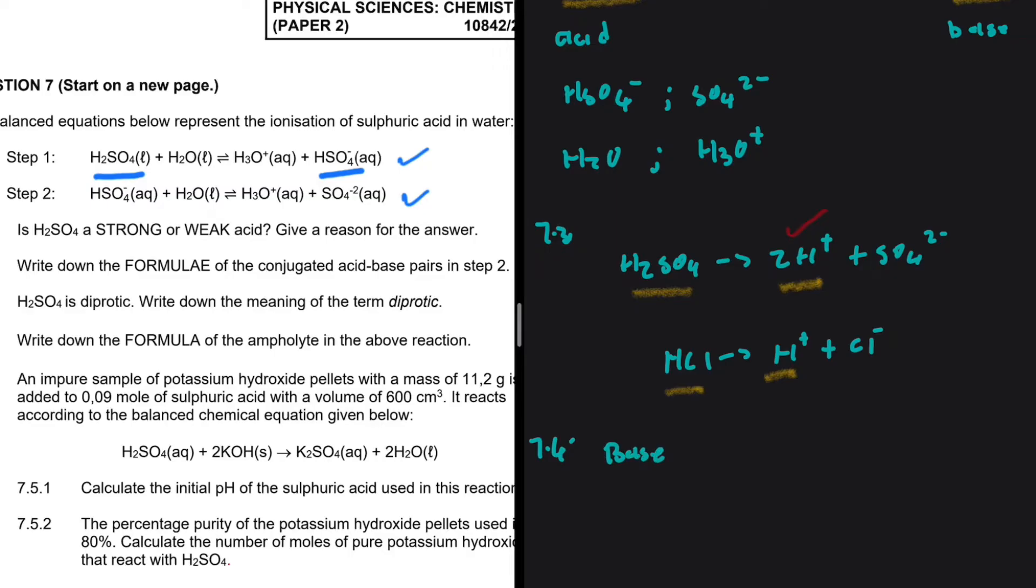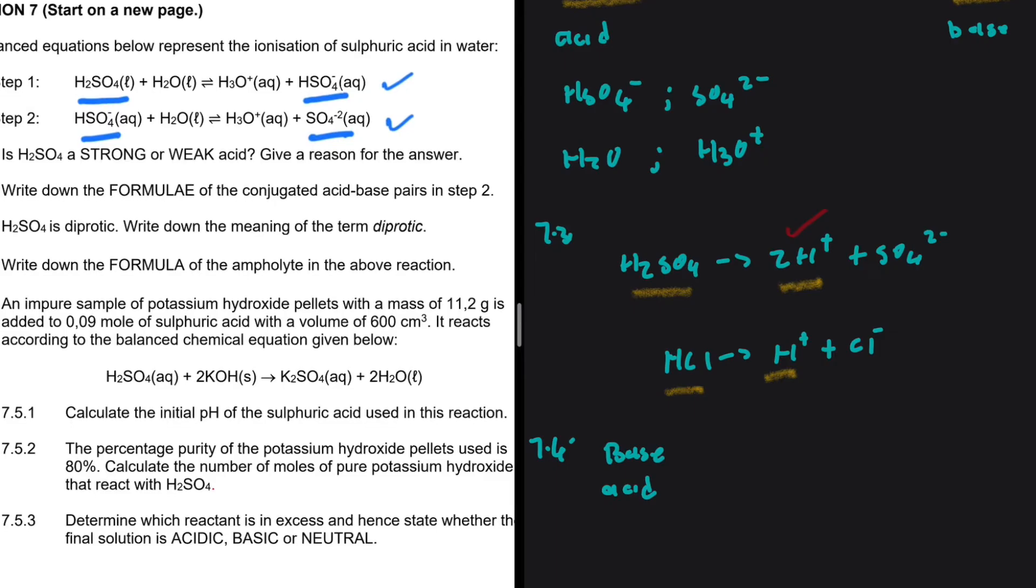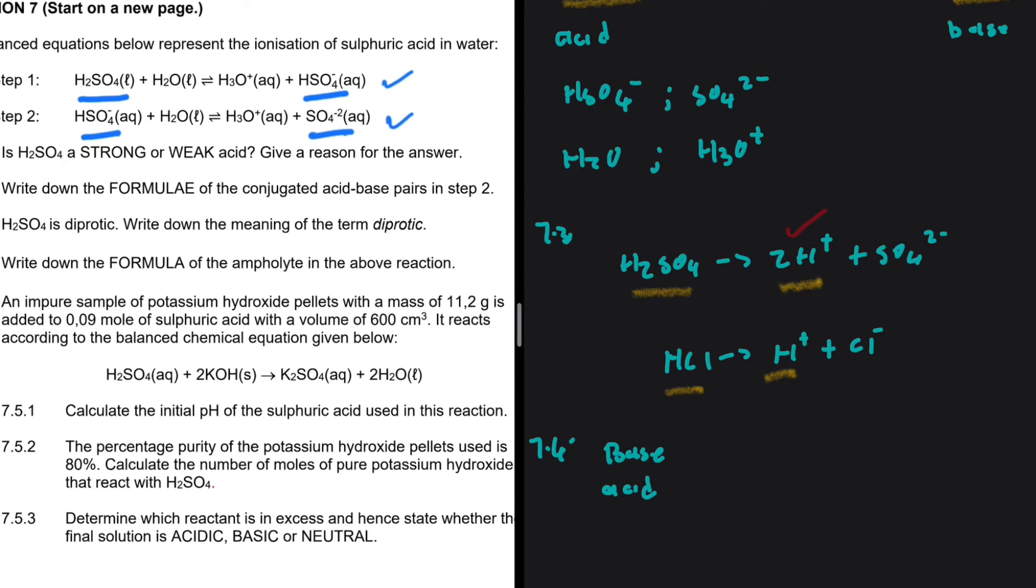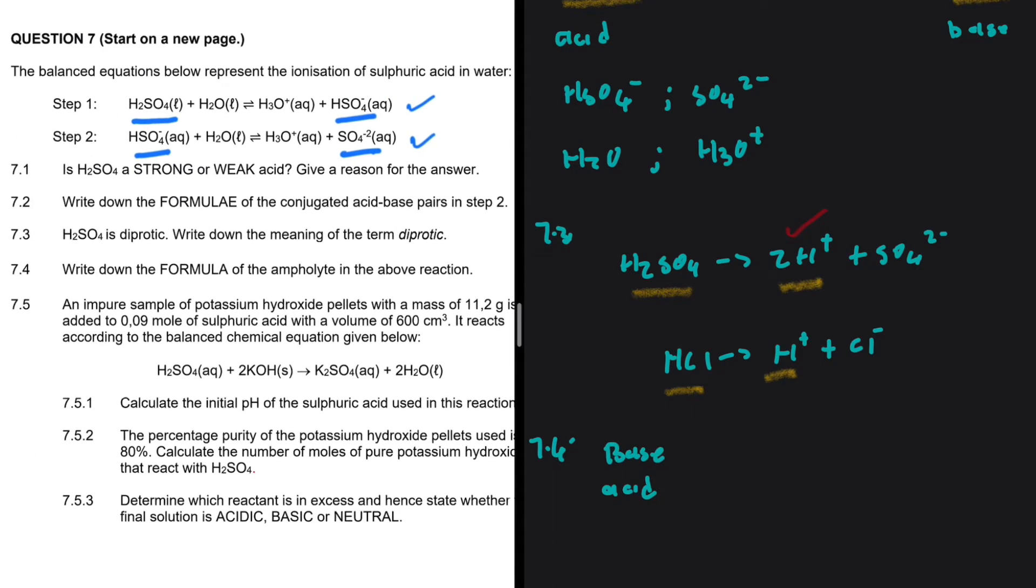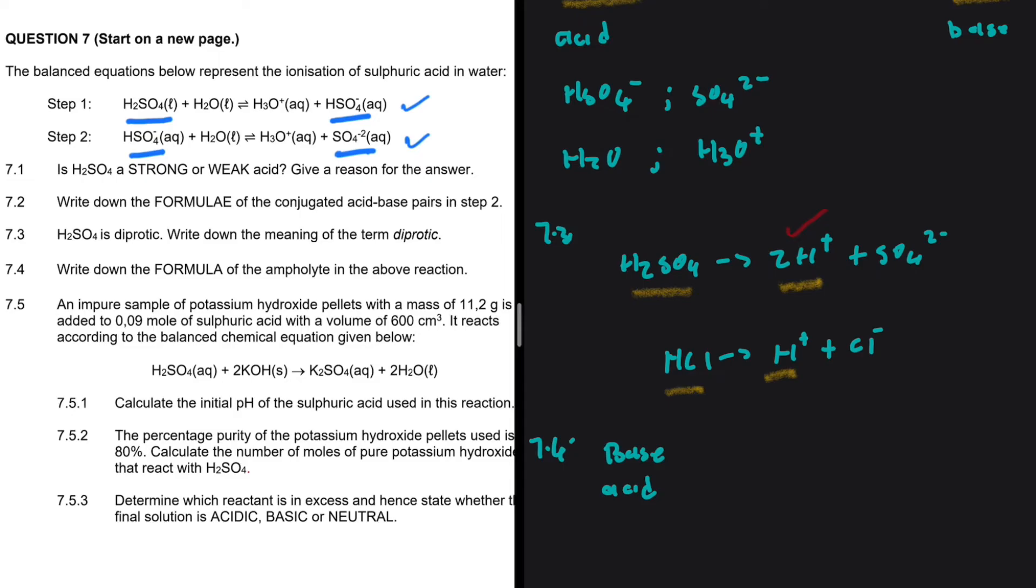Take a look at step 2. In step 2, HSO4 minus donates a proton to become SO4 2 minus. It acts as an acid. So clearly, it can act as both an acid and a base. So what do we refer to that as? It is an ampholyte. So the answer to 7.4, we have HSO4 minus.